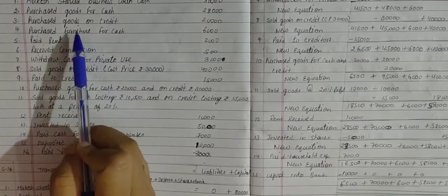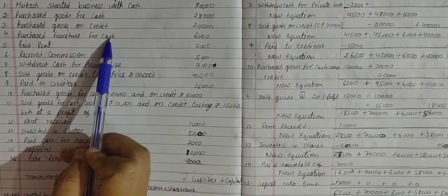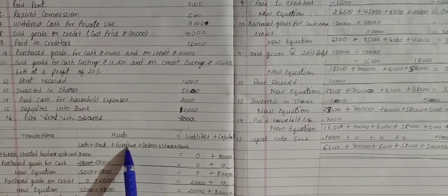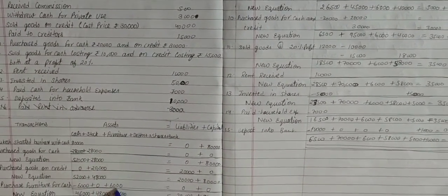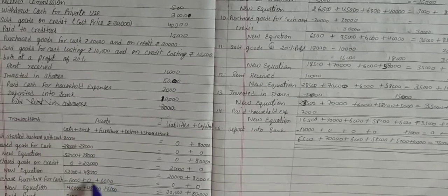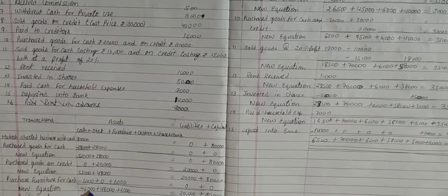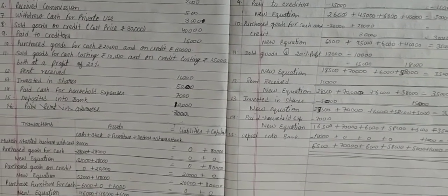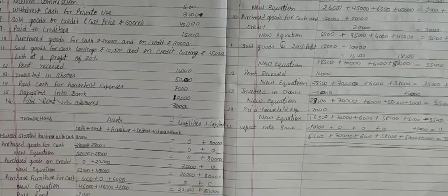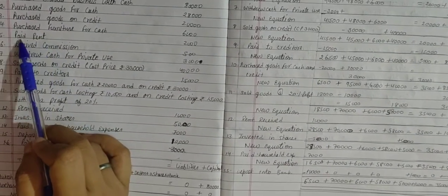Transaction 4: Purchase furniture for cash. Furniture is an asset — not goods. Furniture comes into the business and cash goes out. It affects two accounts: furniture account and cash account. Furniture increases by Rs. 6,000 and cash reduces by Rs. 6,000. New equation: cash 46,000, stock 48,000, furniture 6,000, creditors 20,000, capital 80,000.